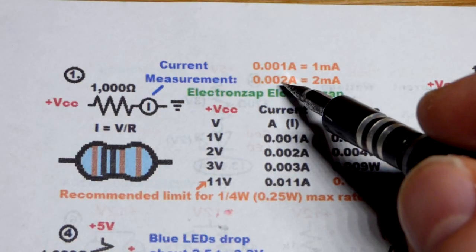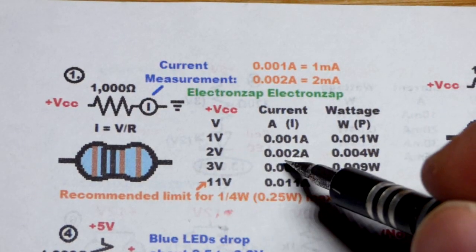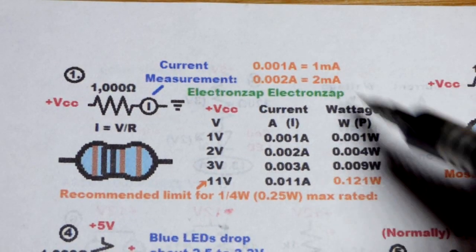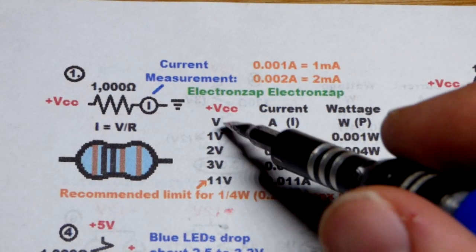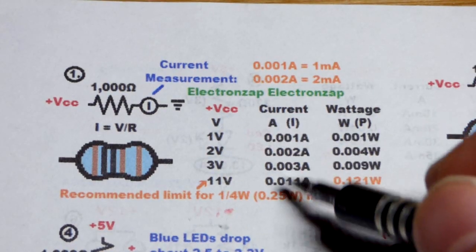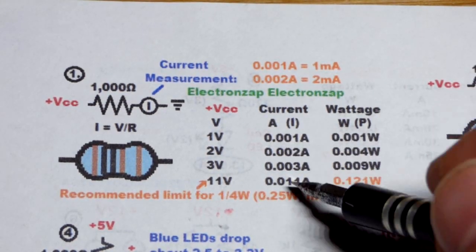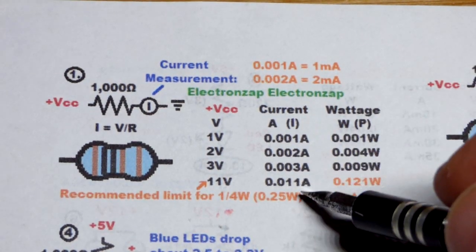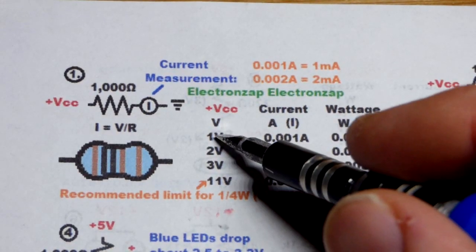So that means one one-thousandth of an amp right there. Basically if it's 0.002 amps, which we would get with two volts, it's two milliamps and so on. So pretty straightforward. If it's a thousand ohms, whatever the voltage is, it's going to be one one-thousandths that much when it comes to the amount of current flowing through it.